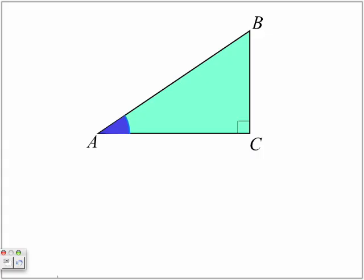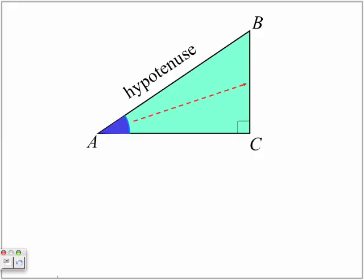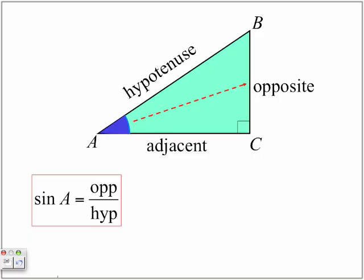Here we have angle A again. Opposite to the 90-degree angle is our hypotenuse. Opposite to angle A is what we call the opposite side. And the remaining side is the adjacent. When looking at a triangle, we want to identify whatever angle is in question, and from there we come across the following ratios.